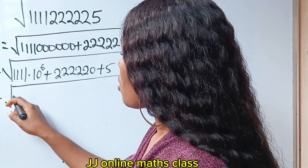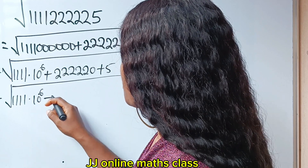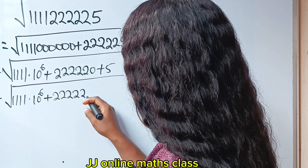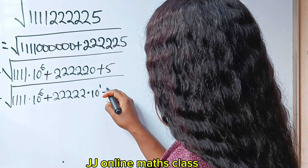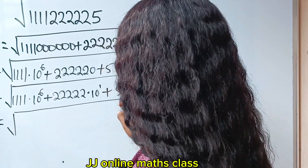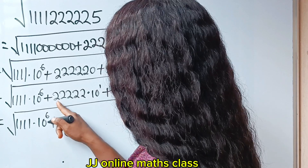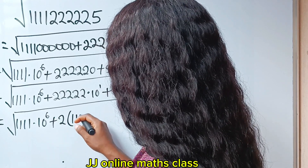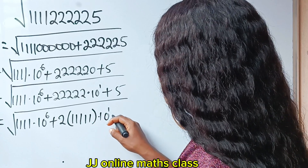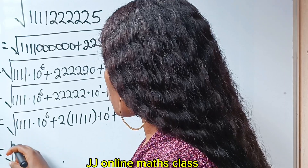This is the same as the square root of 1111 multiplied by 10 to the power of 6, plus the same thing as 22222 multiplied by 10 to the power of 1, plus 5. We can factorize 2 out and we have 11111 multiplied by 10 to the power of 1, plus 5.